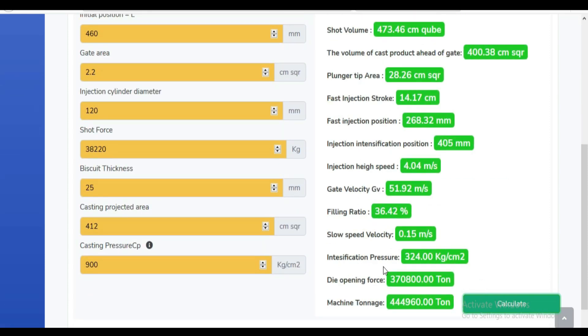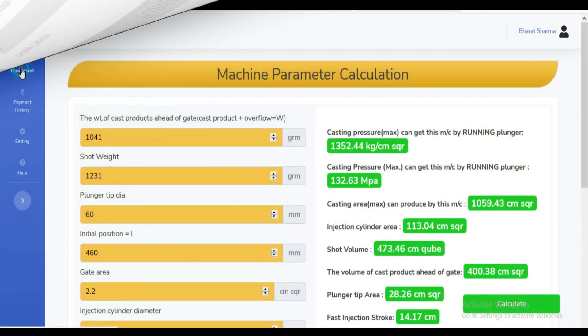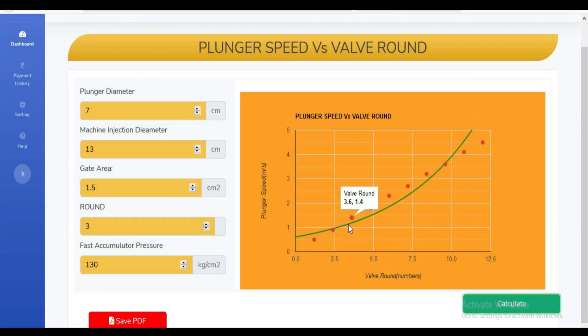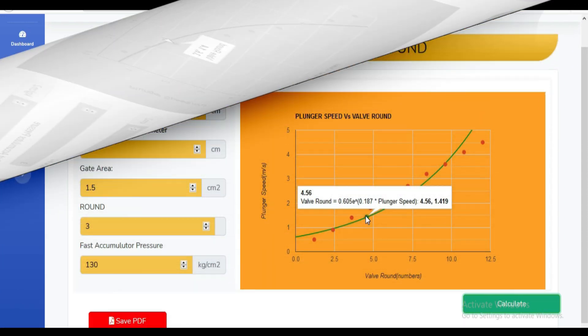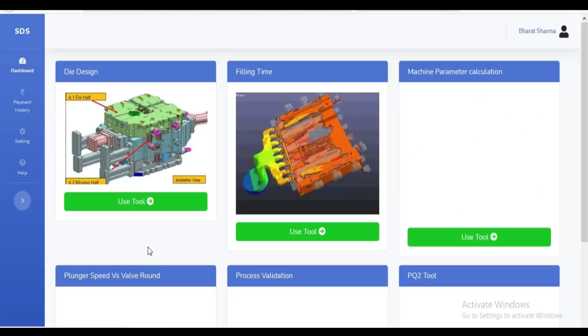You can calculate with a single click. In the plunger speed versus valve round tool, you can generate a graph in which you can find how many valve rounds you have to open to get the desired plunger speed. This kind of tool is only available in STS Cast 1.0 software.